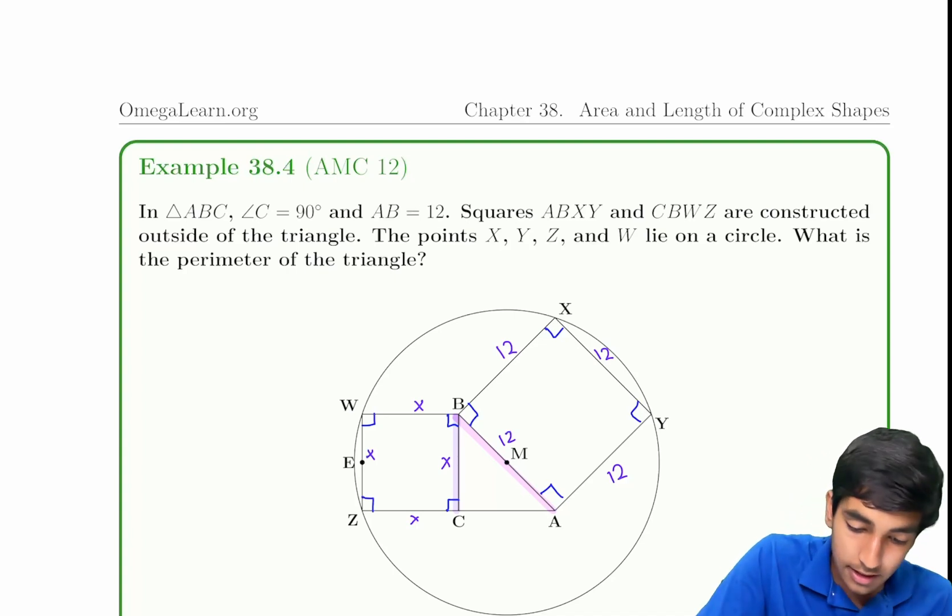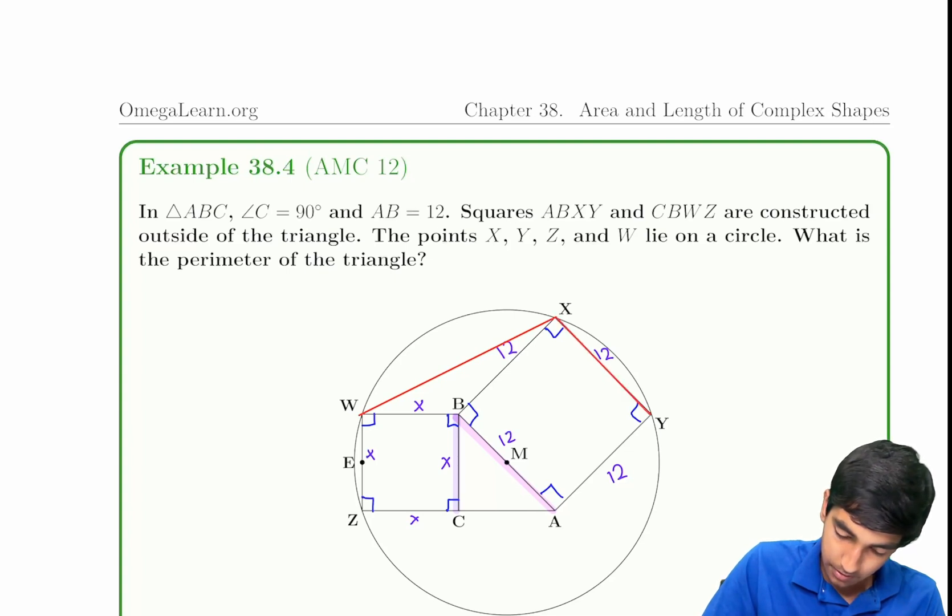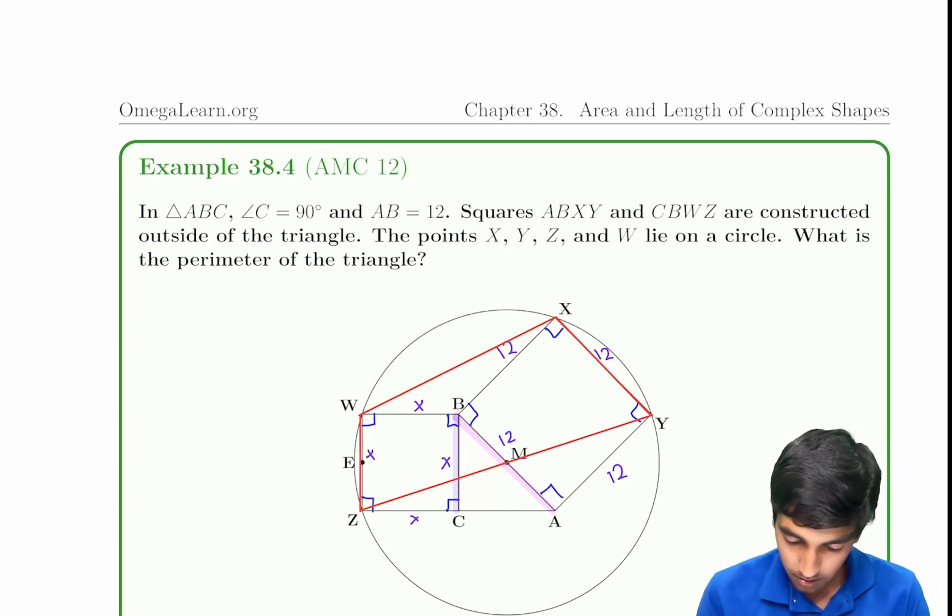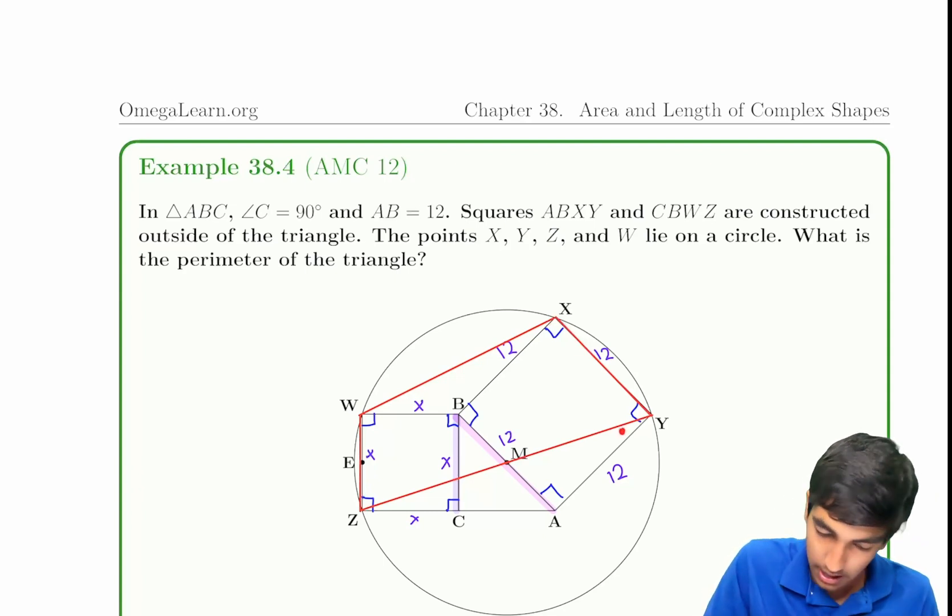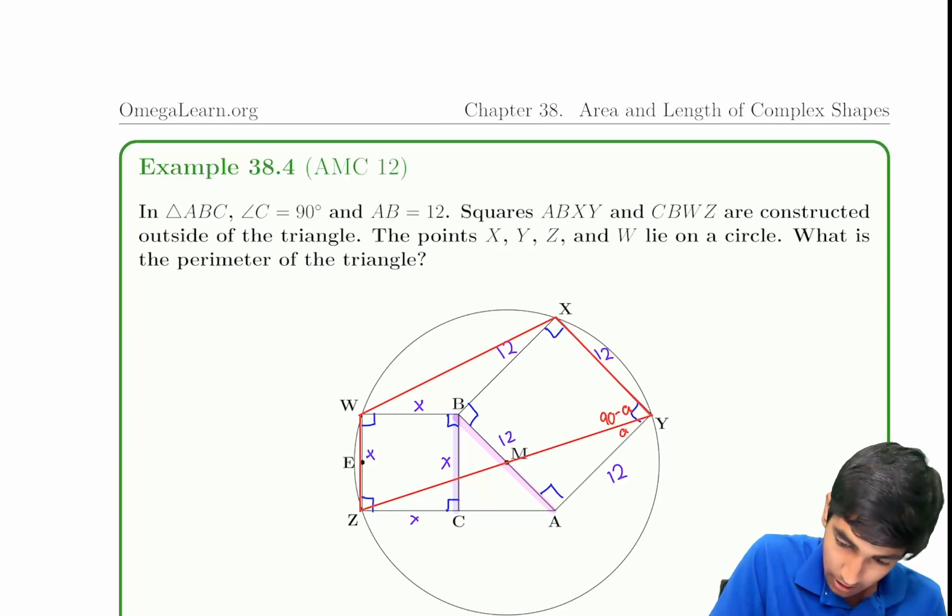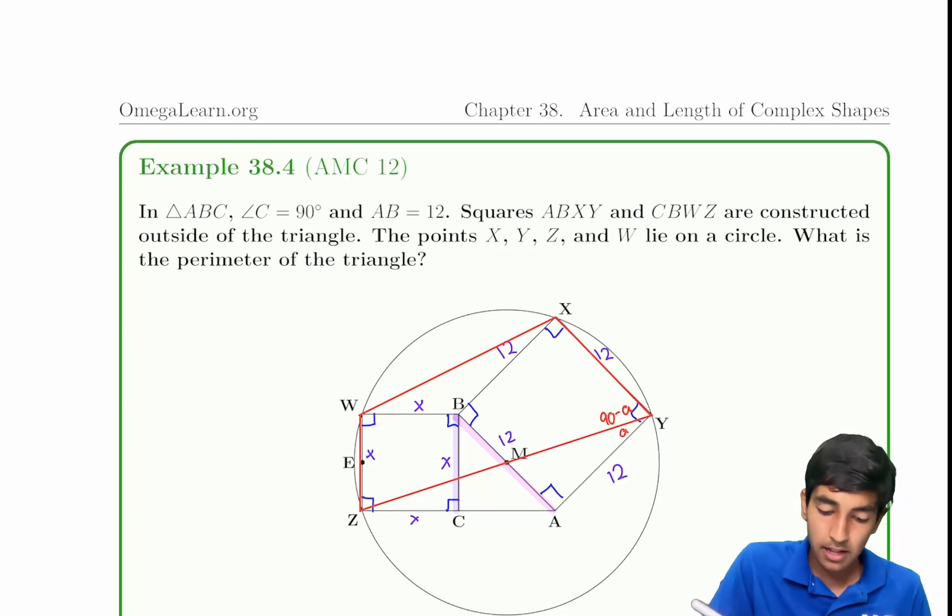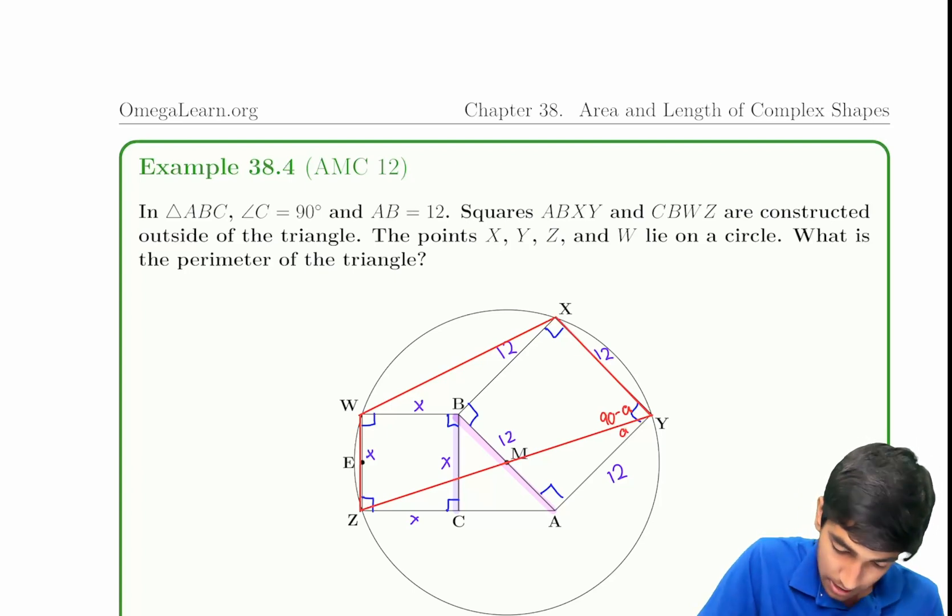We know that there's a cyclic quad here. W, X, Y, Z is a cyclic quad. And what does that really mean? That means, let's call this angle A. And this is going to be 90 minus A. And then this whole angle here will be 90 plus A, making this thing over here A.